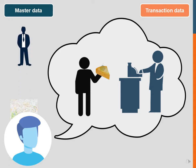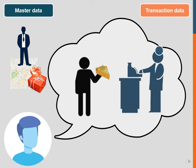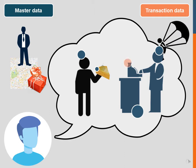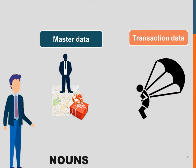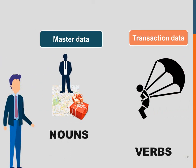Master data depicts people, places, or things that an organization cares about — it would be the customer, the product. We can compare the master data to nouns and the transactional data to verbs. One describes a person, place, or thing, and the other describes an action or an event that those nouns participate in.